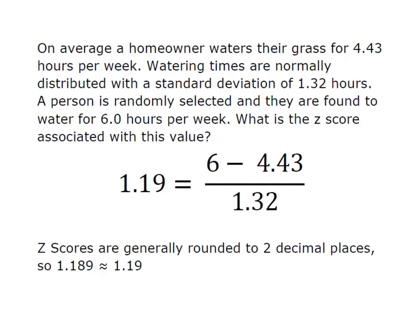Let's see what an example of this looks like. So on average, a homeowner waters their grass for 4.43 hours per week. We see that the watering times are normally distributed. That's the key that you're looking for. Normally distributed means z-scores means bell curve.